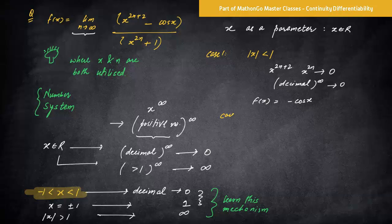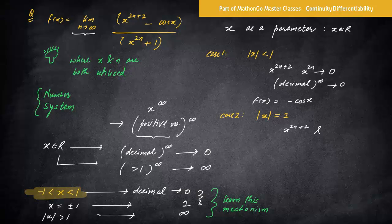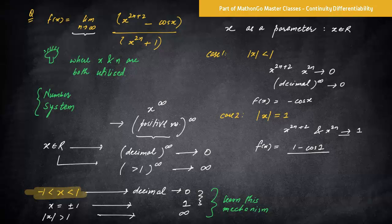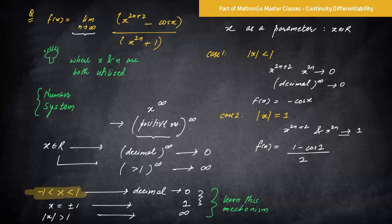Okay, now let's go back to the case two then. So case two here, we have, let's say x is equal, mod x is equal to one, that is plus minus one. Now, let's see what will happen this time round. So what happens is 2n plus 2, and x is to power 2n both will be one, or I should not say approaching, it should be equal rather. So the f(x) this time round would be what? One minus cos one divided by what? It will be two. Got it. This is how you will treat this particular thing.